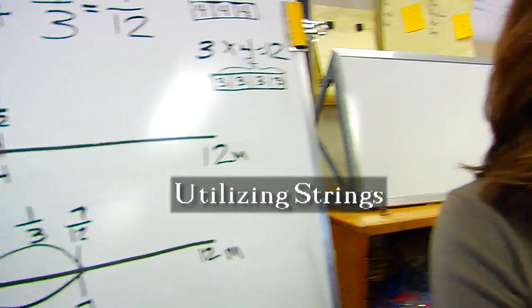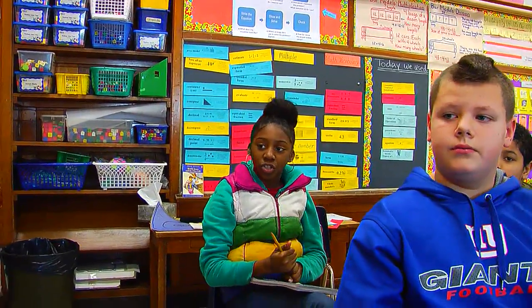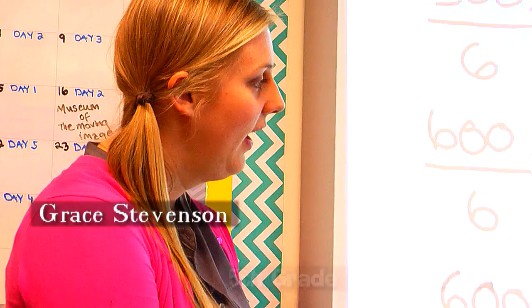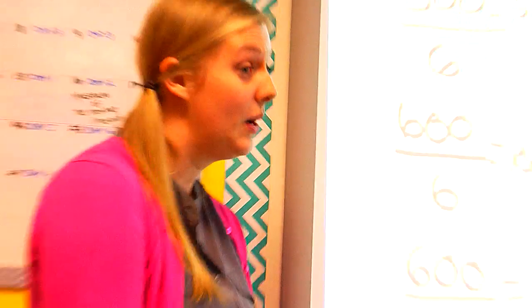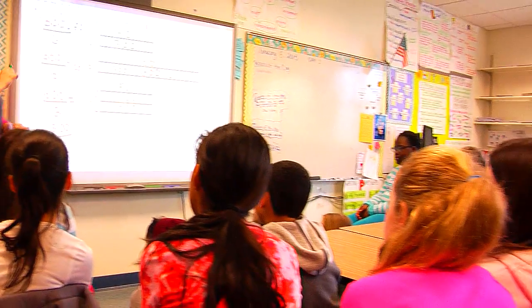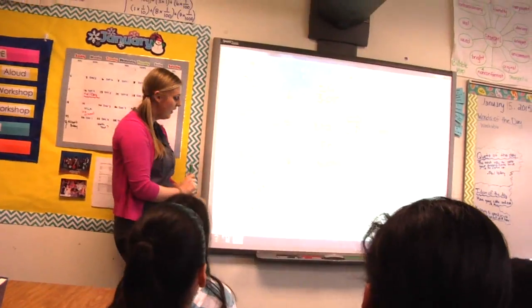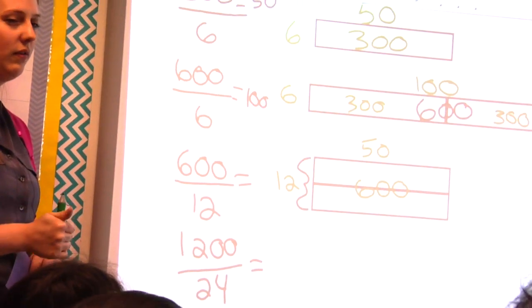Which fraction is bigger, one-third or one-fourth? I think one-third is greater because that has a bigger mile. Okay, good thinking. So we're going to go on to the next division problem in our string, and remember we're using strategies of halving and doubling to find our quotient. Think about this one: 1200 divided by 24, and show me a quiet thumb when you think you know.